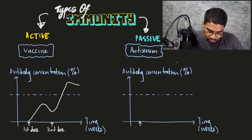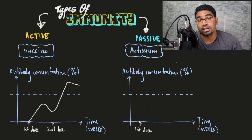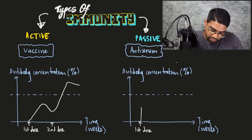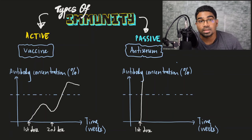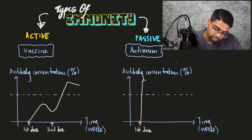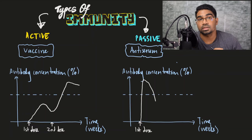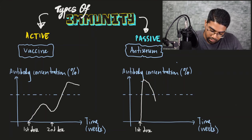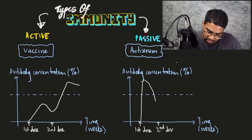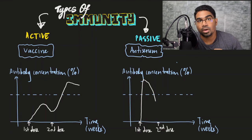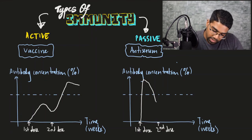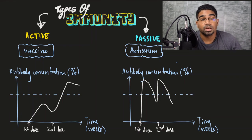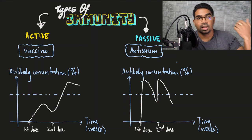When antiserum is administered, the antibodies are already present, so the concentration immediately reaches a level above the effective threshold needed to keep the disease in check. However, since this is passive immunity, the antibody level drops very quickly. If the disease is not yet under control after the level drops below the effective threshold, a second dose may be needed. The body does not produce any of these antibodies — they are produced outside and simply administered.